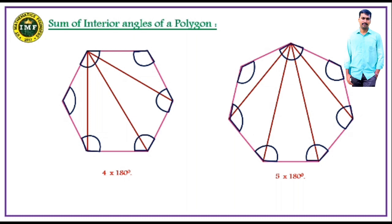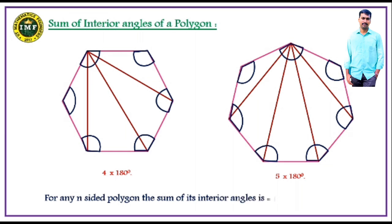From this, I am going to generalize as a statement: for any n-sided polygon, the sum of its interior angles is equal to (n − 2) × 180°, that is, (n − 2) straight angles.